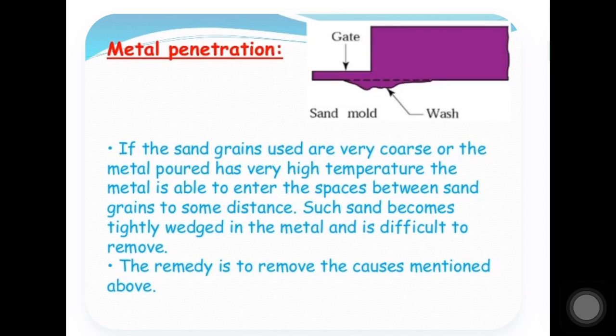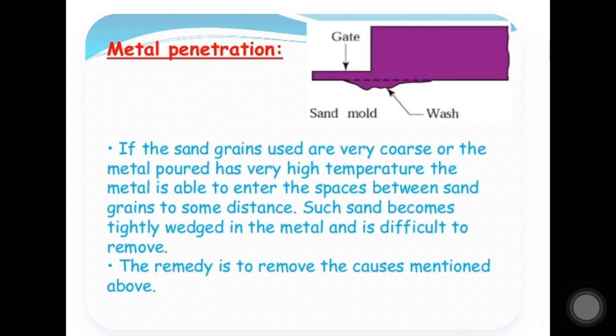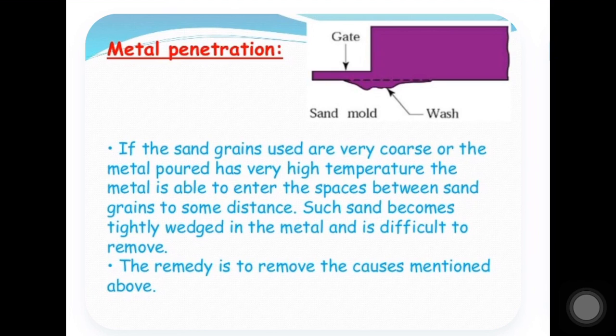The next defect is metal penetrations. If the sand grains used are very coarse and the metal is poured at a very high temperature, the metal is able to enter the spaces between the sand grains to some distance. Such sand becomes tightly welded in the metal and is difficult to remove. The remedy is to remove the causes mentioned — use fine grains of sand and maintain adequate proper temperature to avoid these difficulties.